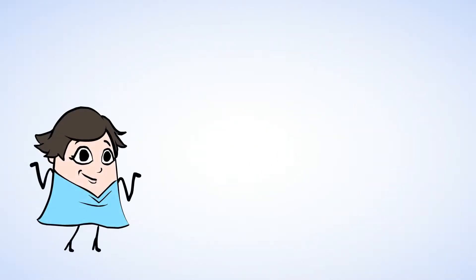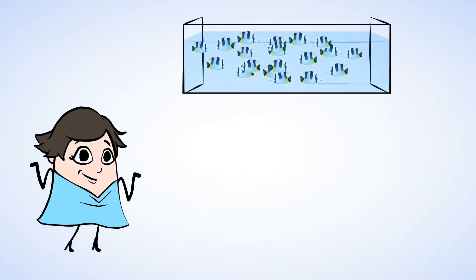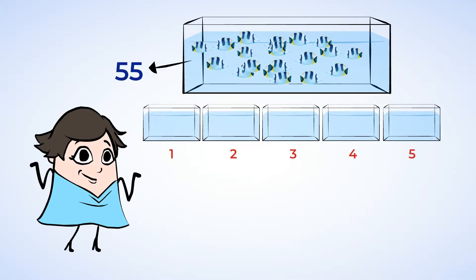Let's try another problem. While visiting a pet shop, you stop to look at the fish. You notice that there is a large tank with 55 fish in it. You see 5 empty tanks that the fish will be divided into. This means that we will need to divide.